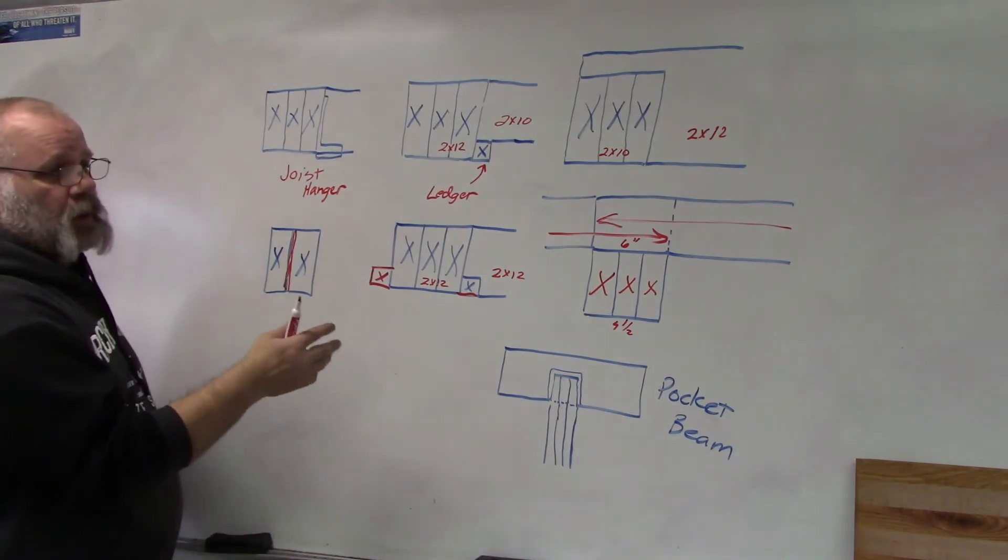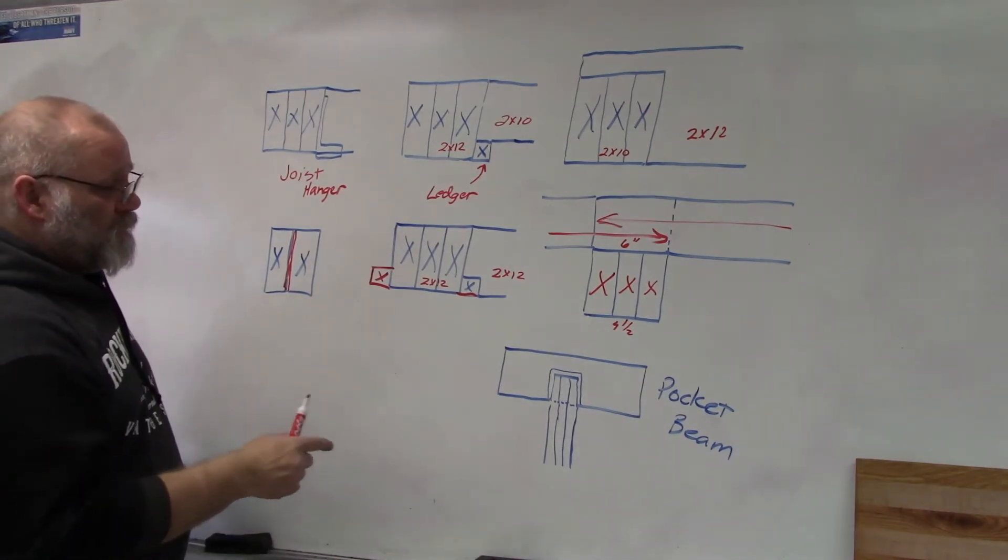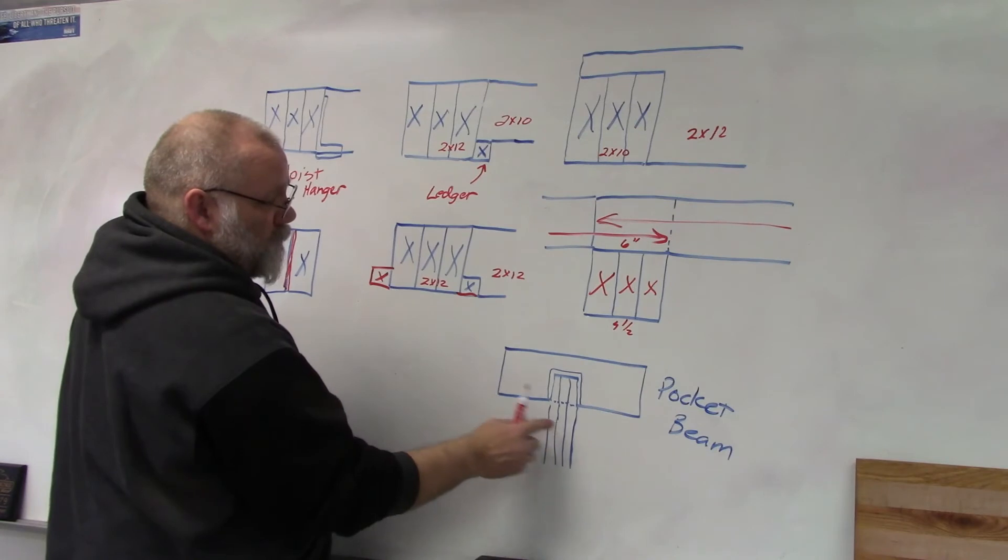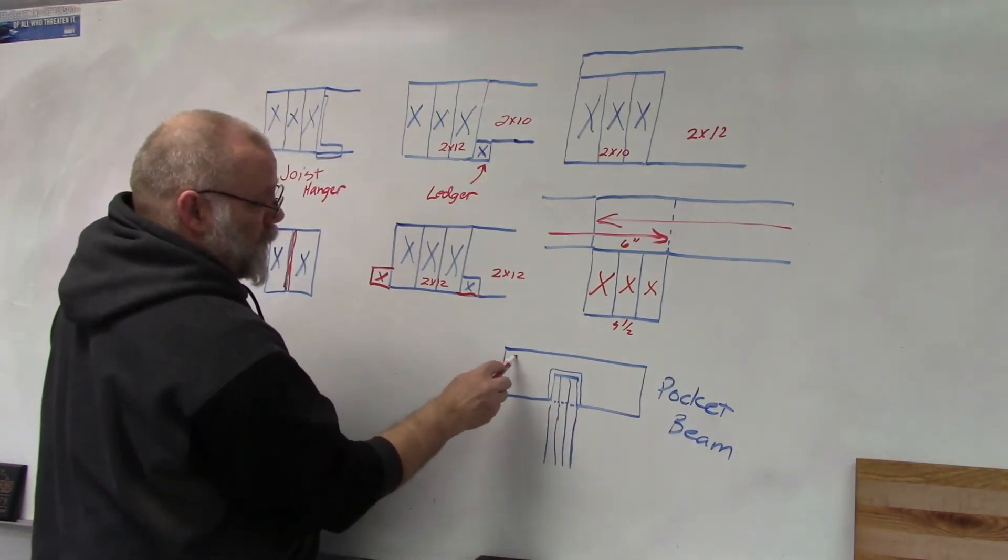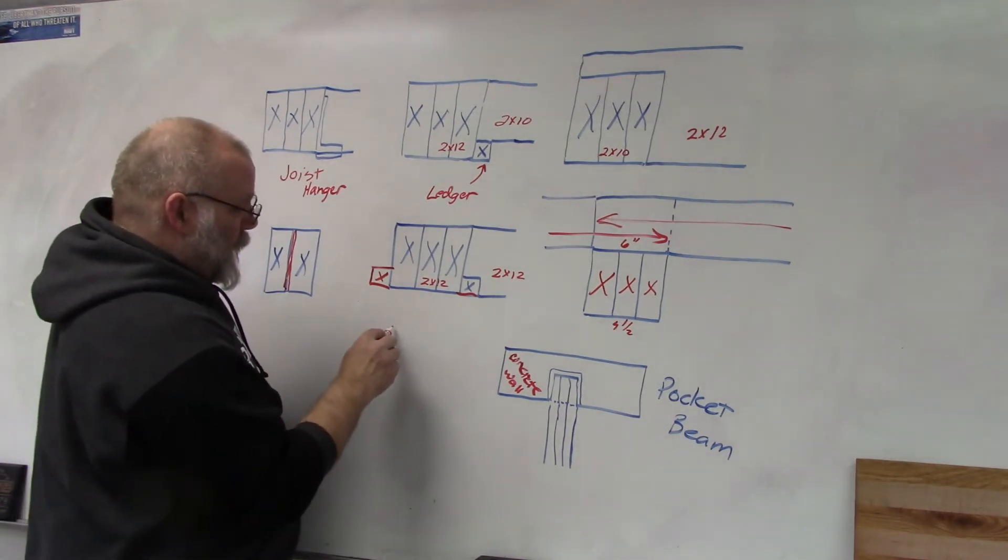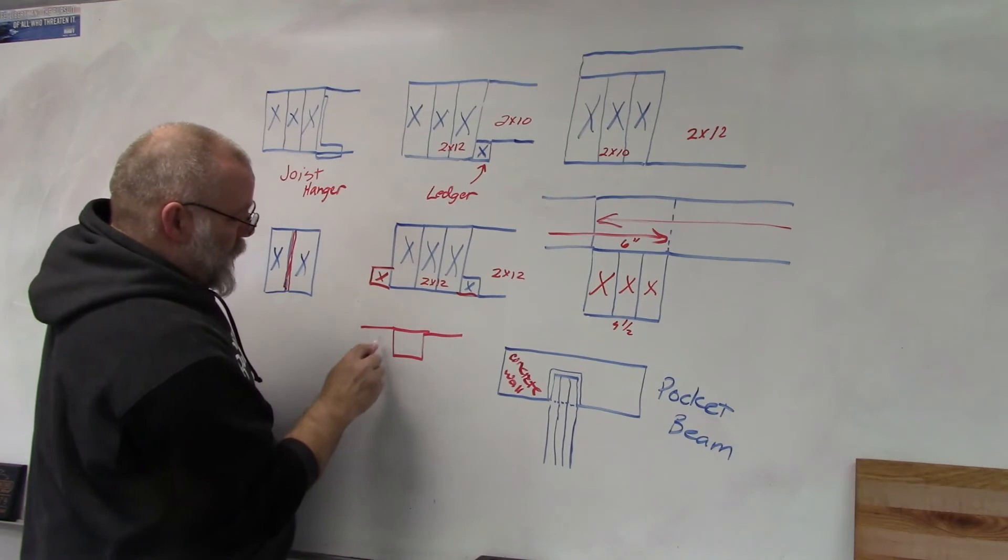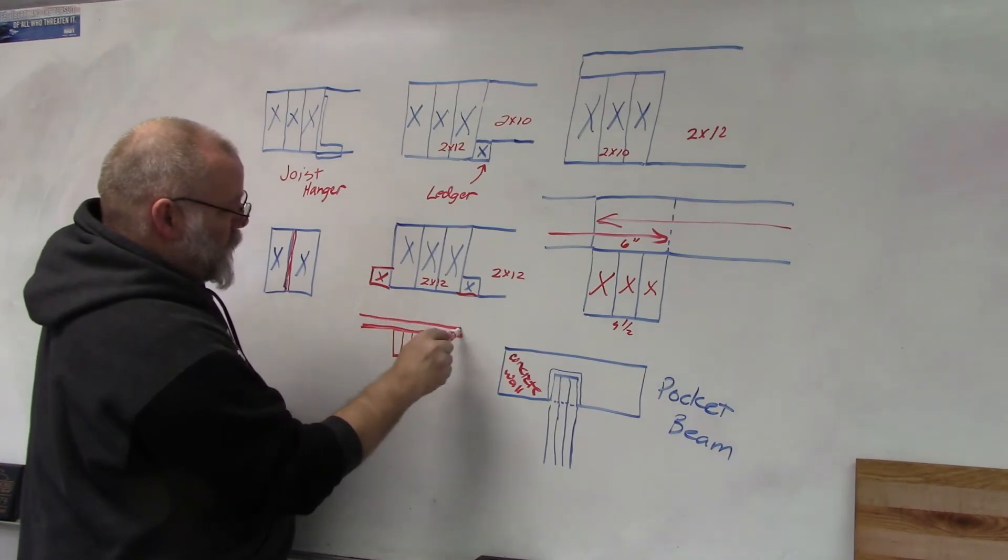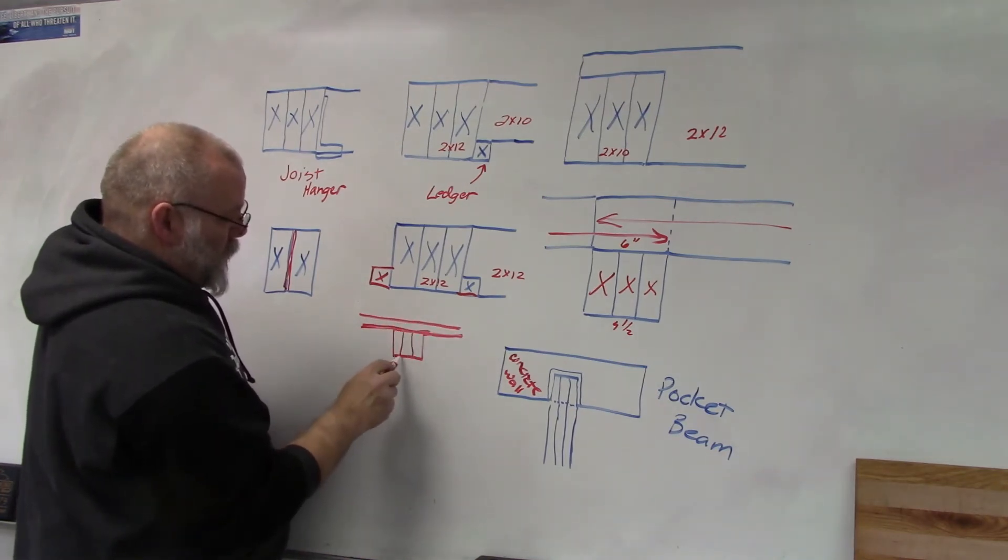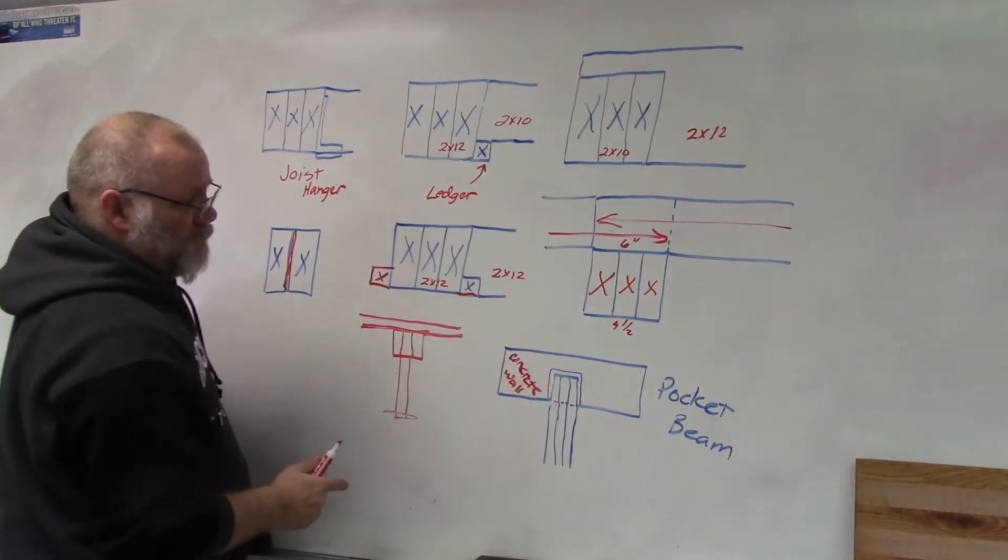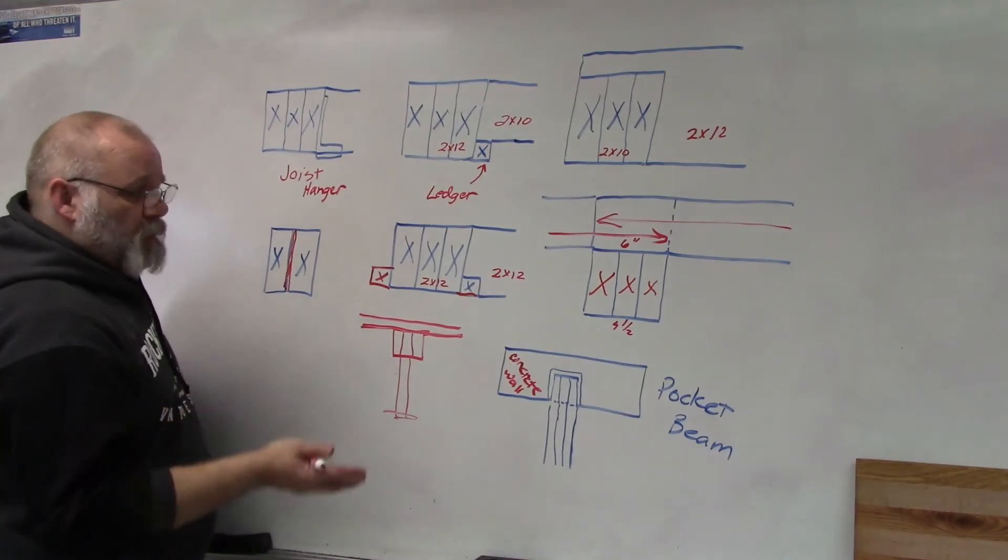So one other thing I want to talk about real quick is what about the ends. This is what they would call a pocket beam. This would be let's say this is a concrete wall that the beam is sitting on, and it sits in a pocket, so it sits down in the pocket down in here. So here's the top of the wall, you got your sill plates going to go on top of that, and you've got your beam and that's going to be supported by some kind of a post, but it's inside a pocket that sits in the wall.